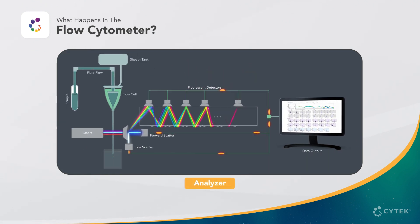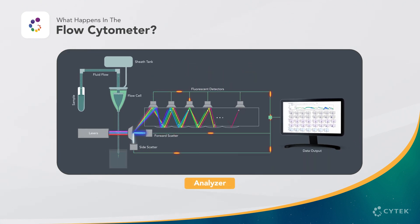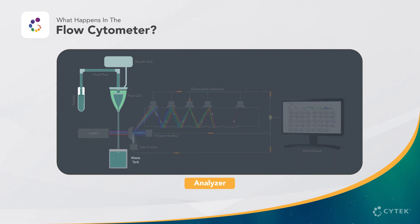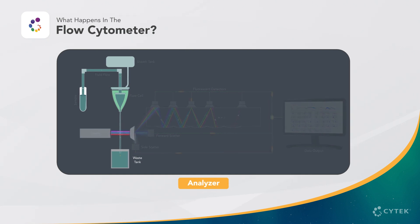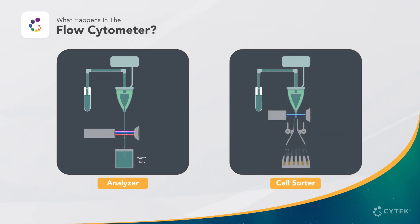On a flow cytometer analyzer, this data serves as the endpoint of the sample, and the cells are deposited into a waste tank for disposal. In contrast, cell sorters have the capability to identify and direct cells of interest into collection tubes or plates, facilitating their use in downstream in vivo or in vitro applications, such as single-cell genomics profiling.